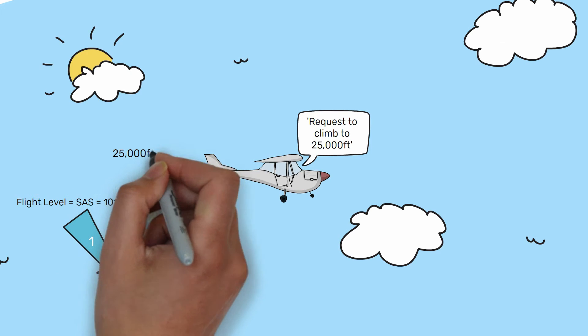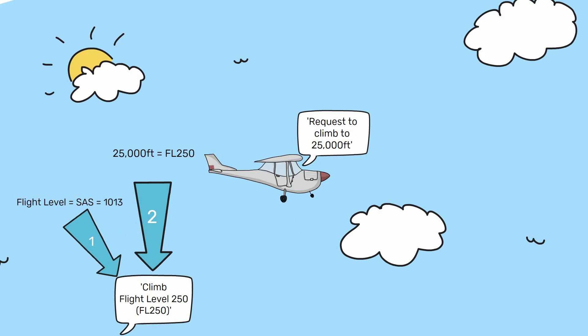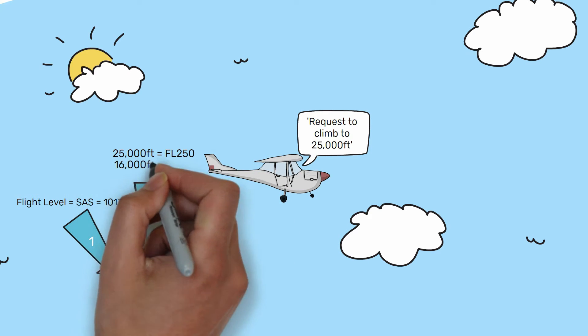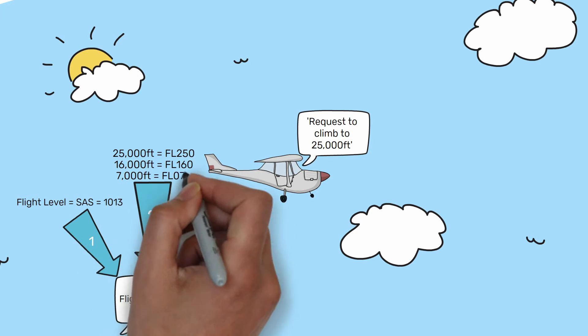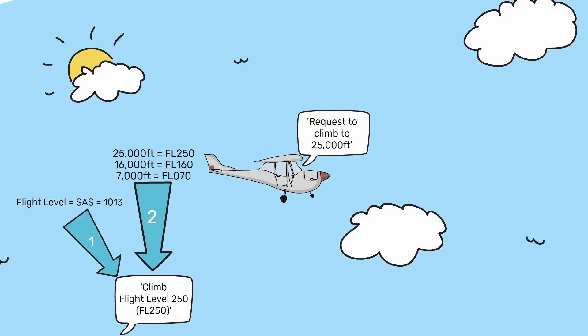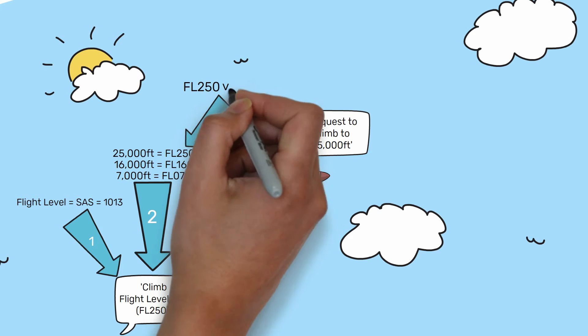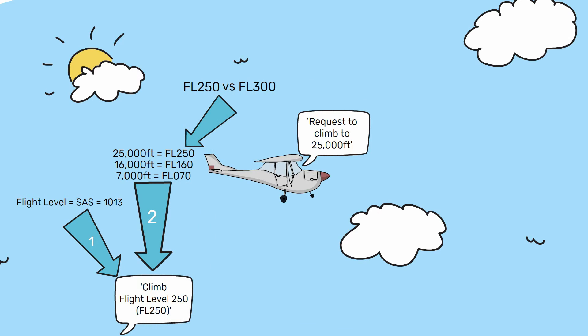25000ft is equivalent to flight level 250, as is 16000ft and flight level 160, and 7000ft being flight level 070. It is said this way to avoid confusion and emphasise the point at which you should change to SAS from QFE or QNH.